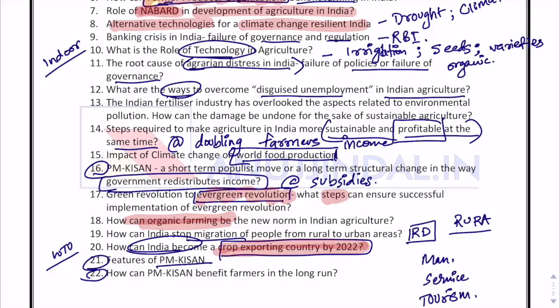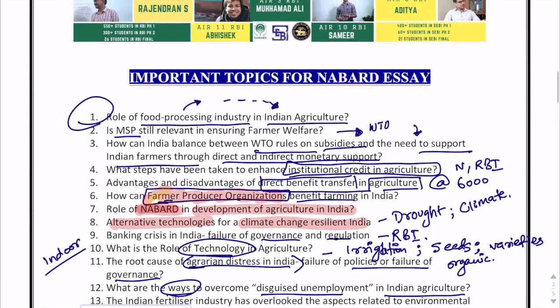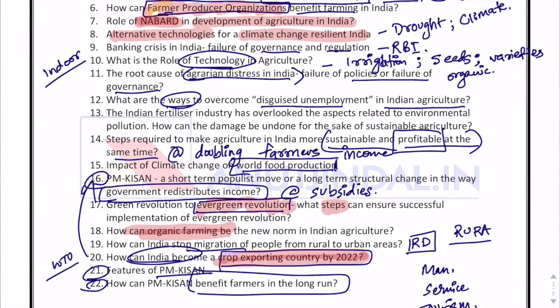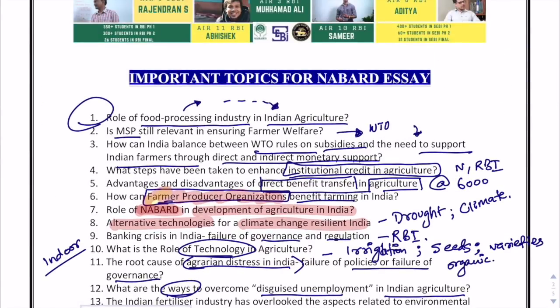Features of PM Kisan are a direct question with very high chances of being asked in the examination, and how PM Kisan can benefit farmers in the long run — this is the same question framed in another way. This is how questions and essays can be framed and asked. I have tried to discuss the majority of topics related to Indian agriculture and rural development. If you have any more topics, feel free to provide them in the comments below. I shall be starting a detailed discussion of every topic one by one, covering it on a daily basis. All the very best, please take care.